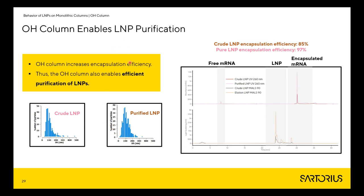As I mentioned, the OH column also enables LMP purification. You can bind LMPs under specific conditions, elute and collect the main fraction. What you get is that from the crude formulation to the purified fraction, the encapsulation efficiency increases. Here is an LMP Switcher chromatogram, and in pink we have the UV of the encapsulated mRNA for the pure fraction, and in brown the crude fraction. We see a much more concentrated response from the purified fraction, and we mostly remove the free mRNA because it doesn't bind to the OH column.